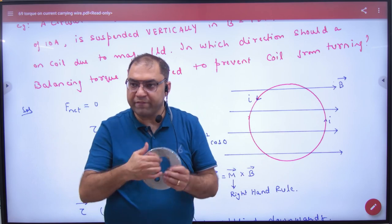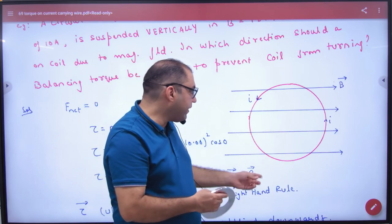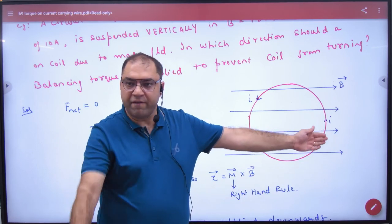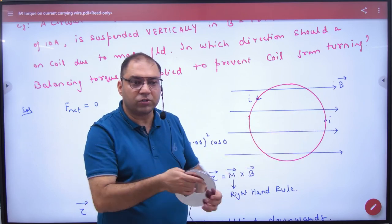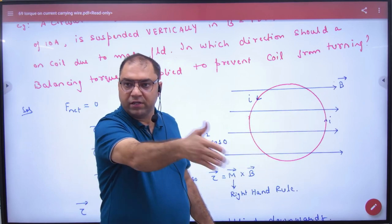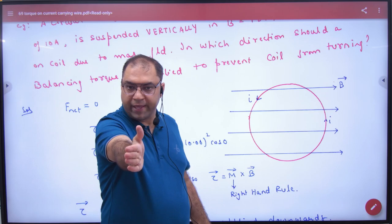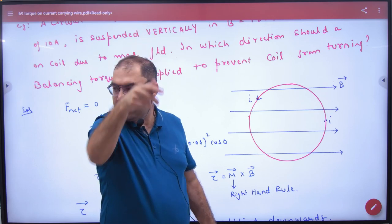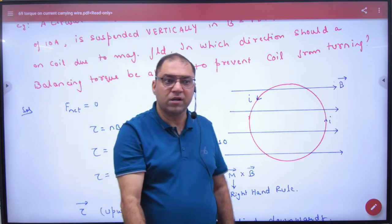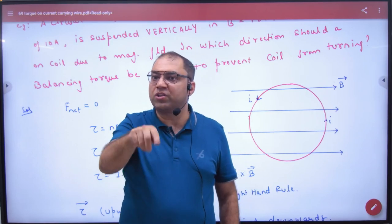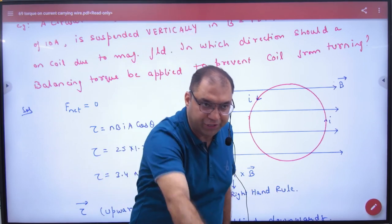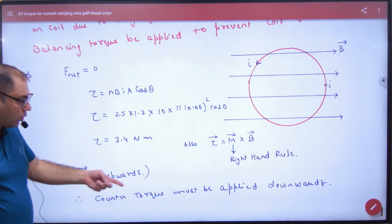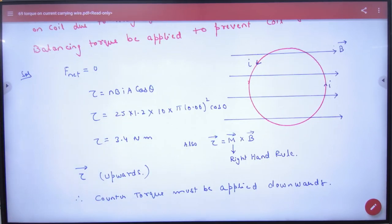And where is the B vector? Here. So M vector here, B vector here. So M vector here, B vector here. So M cross B. M cross B. Thumb will come upward. So torque will act where? Upward. You want to stop it from going upward. So your torque should be applied where? Downward. Answer is downward. Is this point clear online?